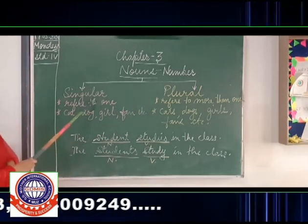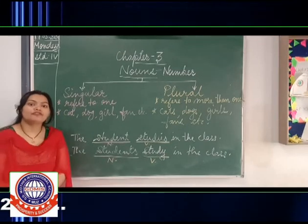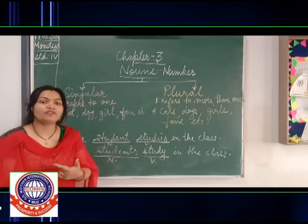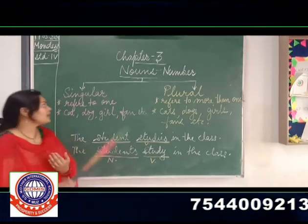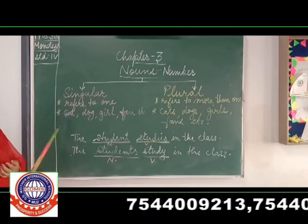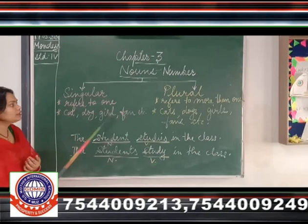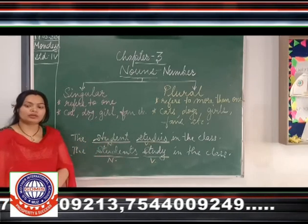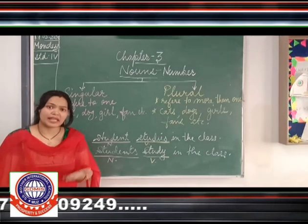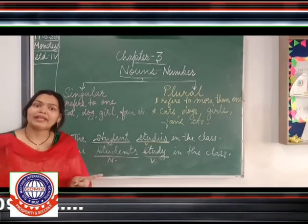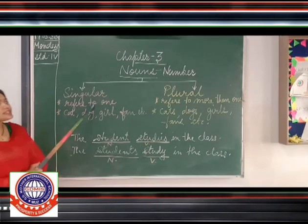So singular means those which refers to only one. When we are talking about one noun that is known as singular. For example cat, dog, girl, fan. These are your singular because they are one in number. So when a person, a place or a thing it stands in one in number, it is known as singular.